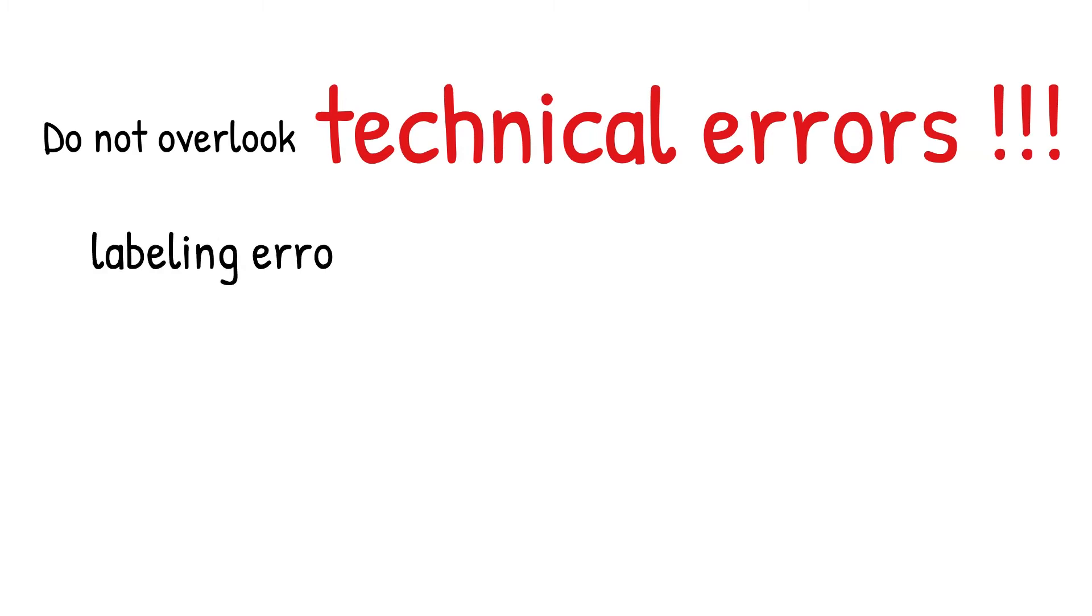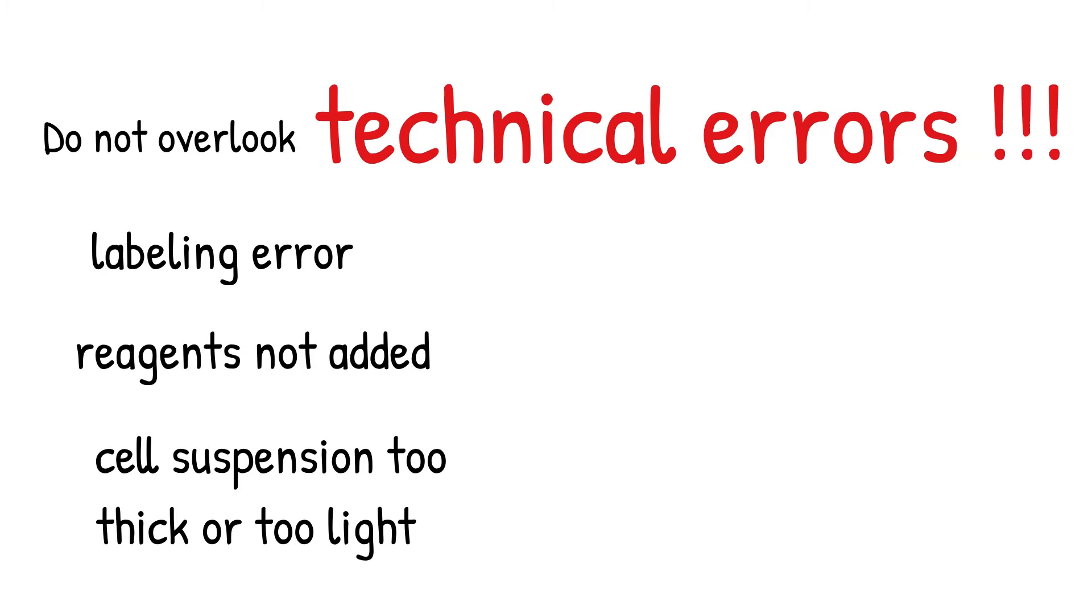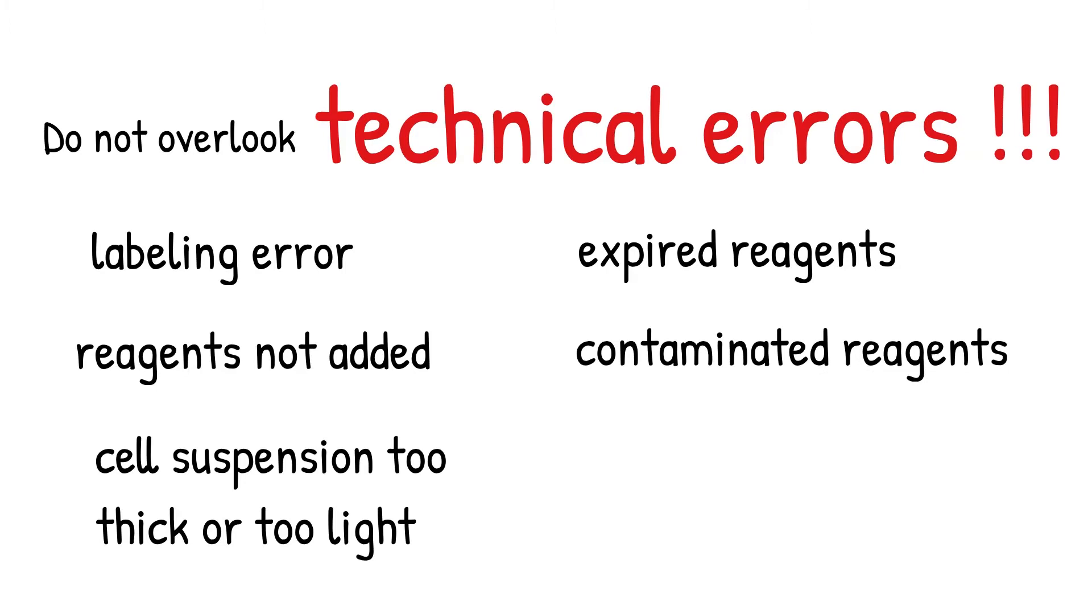Technical error include things like labeling error, forget to add reagents or wrong reagents added to the test tube, cell suspension is either too thick or too light, expired reagents, contaminated reagents, or equipment failure such as uncalibrated centrifuge.